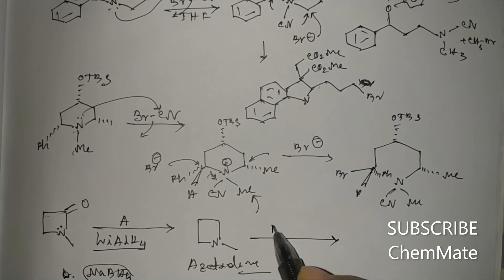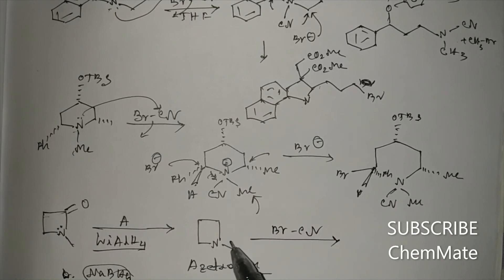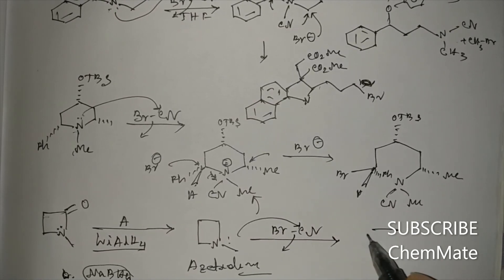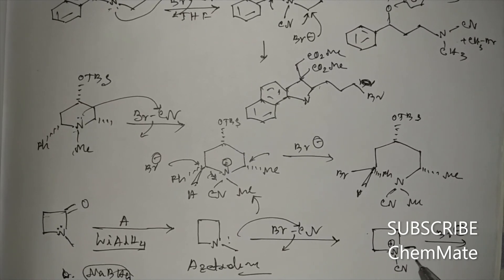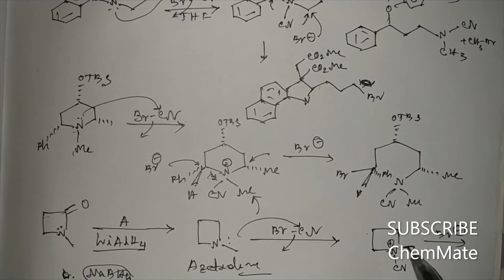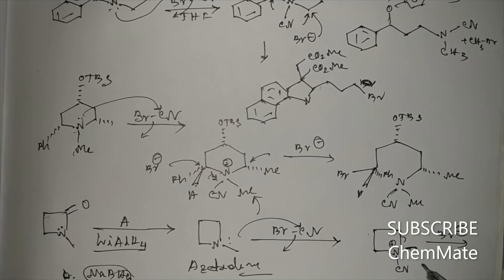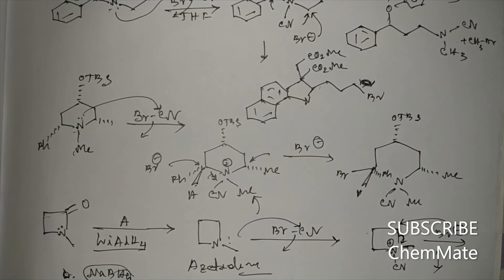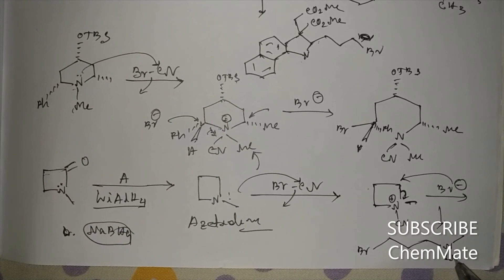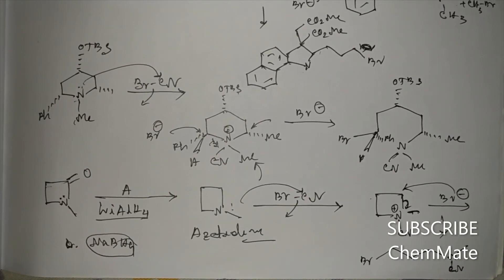After reducing the amide to the azetidine, this is then treated with BrCN. The quaternary intermediate forms, and Br minus can attack either the methyl group or the ring carbon. If the methyl C–N bond cleaves, a methyl carbocation forms; if the ring C–N bond cleaves, a primary carbocation forms. Since a primary carbocation is more stable than a methyl carbocation, Br minus preferentially attacks the ring carbon, giving the product with N-Me, CN on nitrogen, and a three-membered ring opened to a three-carbon bromide chain.